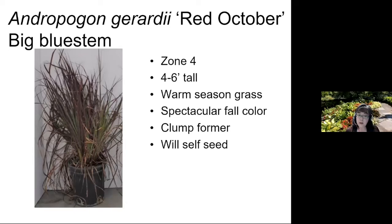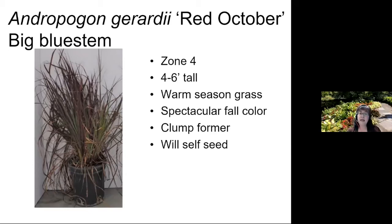Red October big bluestem did very well. It's a zone four plant, four to six feet tall, with beautiful seed heads that look like a turkey foot. It's a warm-season grass that looks its best in late summer going into fall, when it turns a beautiful red color — you're getting fall color in an ornamental grass. It's a clump former. The one downside is that Red October will self-seed a bit.